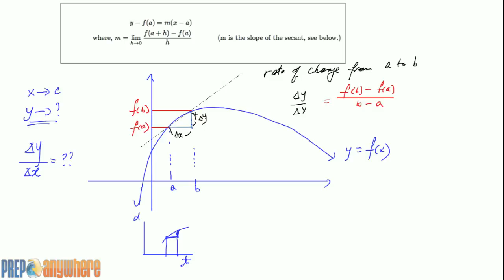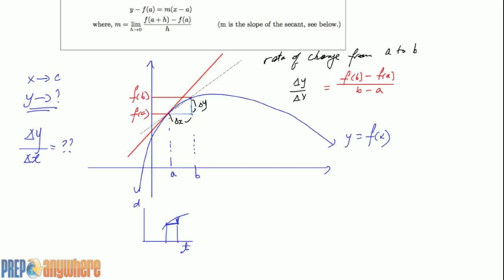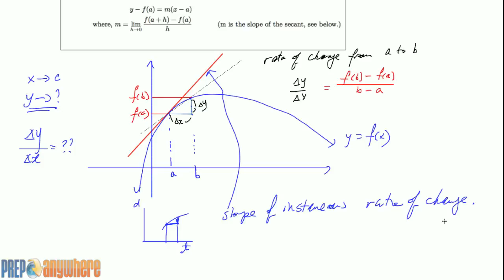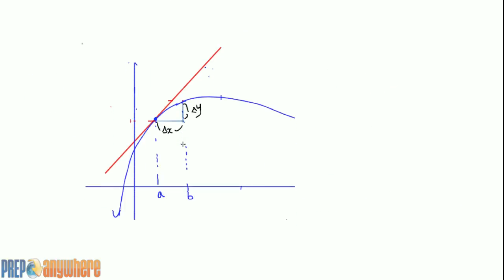Instead of finding what's happening over a given interval, what people wanted to find out was: I don't want the overall change — I want to know what's exactly happening at that exact point. We call this the instantaneous rate of change, which is represented by the slope of the line that is tangent to the curve. The way that tangent line is changing — its delta y and delta x — gives the rate of change at that exact point.